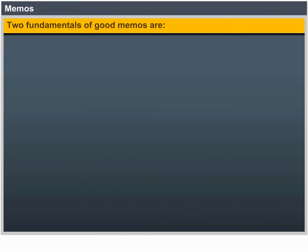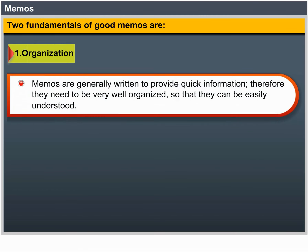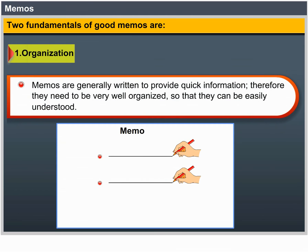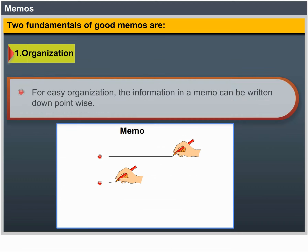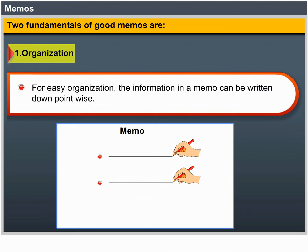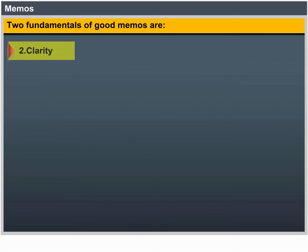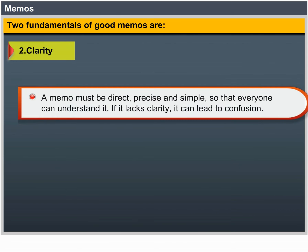Two fundamentals of good memos are: 1. Organization — memos are generally written to provide quick information, so they need to be very well organized and can be written point-wise for easy understanding. 2. Clarity — a memo must be direct, concise and simple so that everyone can understand it. If it lacks clarity, it can lead to confusion.